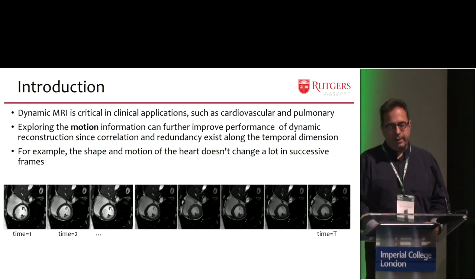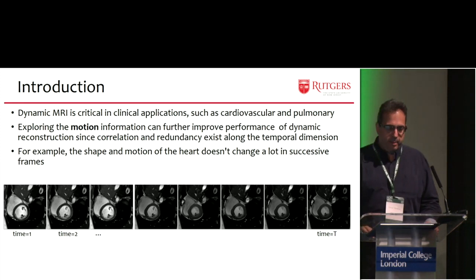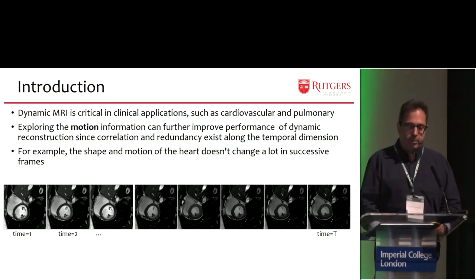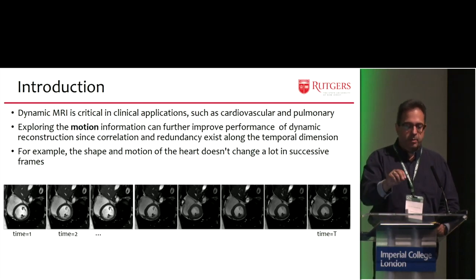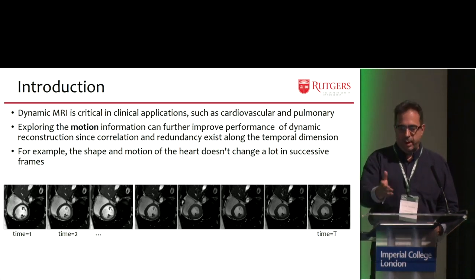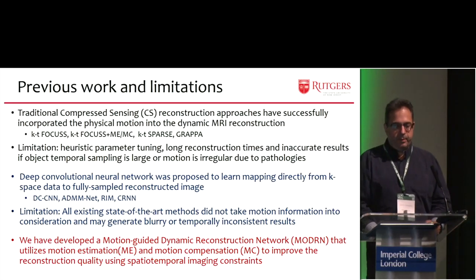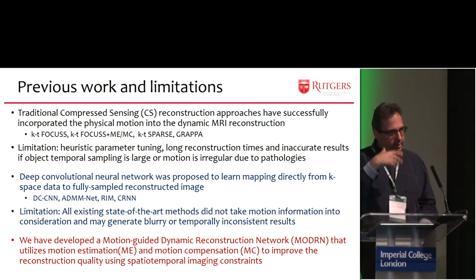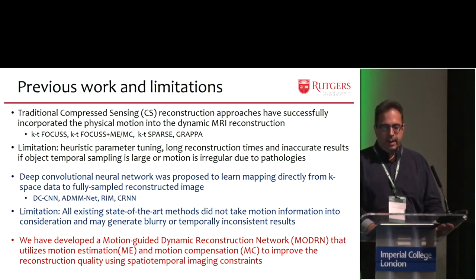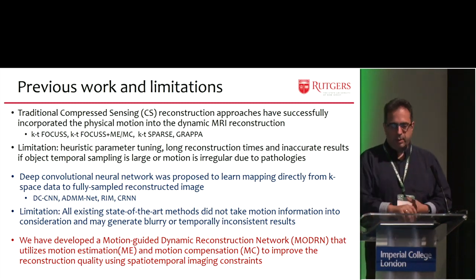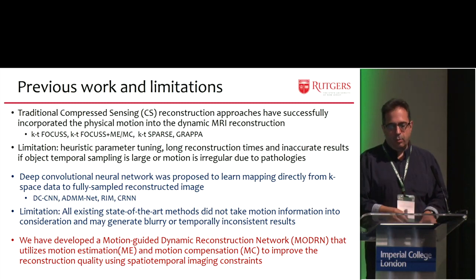Dynamic MRI is very critical in clinical applications such as cardiovascular and pulmonary. Exploring the motion information can further improve performance of dynamic reconstruction, since there is correlation and redundancy along the temporal dimension. For example, the shape of the heart doesn't change so much in successive frames, as you can see in this case. Traditionally, compressed sensing started the revolution of doing this. Many reconstructed approaches have successfully incorporated physical motion into the dynamic MRI reconstruction. The limitations include a lot of heuristic parameter tuning, long reconstruction times, and inaccurate results if temporal sampling is large or motion is irregular due to pathologies.